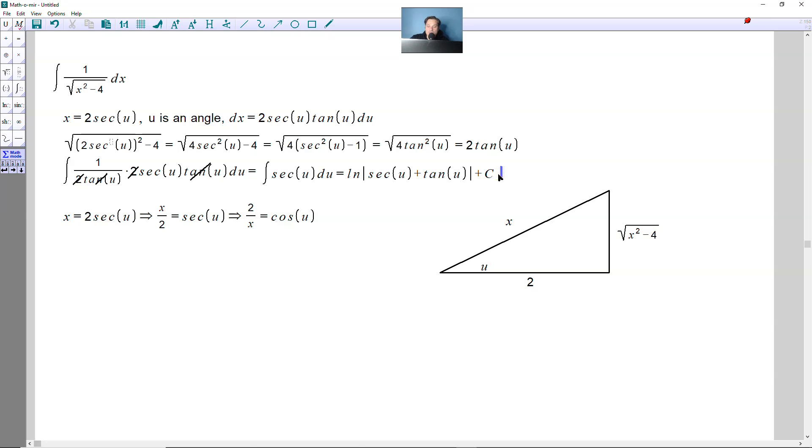Going back to the integral, continuing, I'm going to now write ln of the absolute value, secant of u we already know is equal to x over 2, easy enough, plus, but the tangent of u is the square root of x squared minus 4 divided by 2. So it's going to be x squared minus 4 divided by 2, and then you add c at the end.